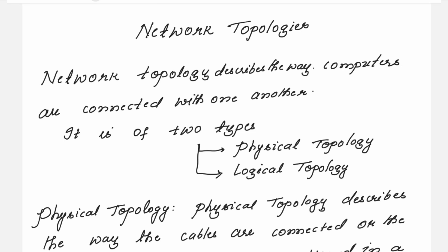Let us first define the word network topology. A network topology describes the way the computers are connected with one another. There are two different types of topology: one is the physical topology and the other one is the logical topology. The one you are studying in your syllabus is all about the logical topology.